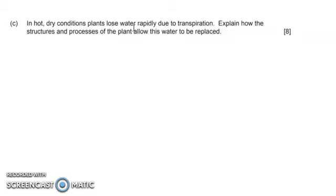In hot, dry conditions, plants lose water rapidly due to transpiration. Explain how the structures and processes of the plants allow this water to be replaced. This is 8 marks. Let's get cracking.